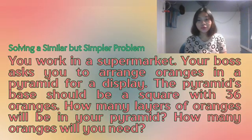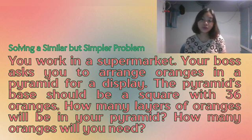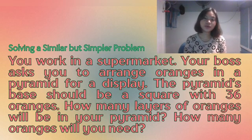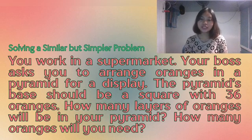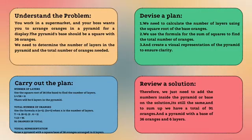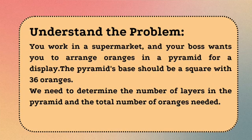To explain this further and to make sure that you have already understood how Polya's four-step problem solving works, let's have another example. In this example, you work in a supermarket and your boss wants you to arrange oranges in a pyramid for a display. The pyramid's base should be a square with 36 oranges. We need to determine the number of layers in the pyramid and the total number of oranges needed. We understood the problem as this: there are 36 oranges as the base of the pyramid, and what we need to determine is the number of layers and the total number of oranges needed to create this pyramid.